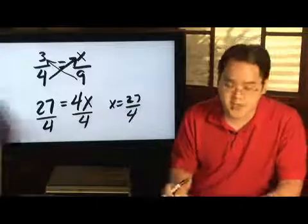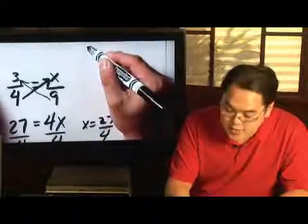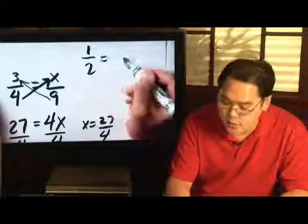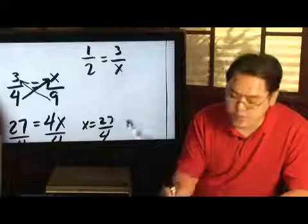Now, what if x is on the denominator? Same exact strategy. Suppose you have 1/2 equals to 3 over x. Same exact approach.